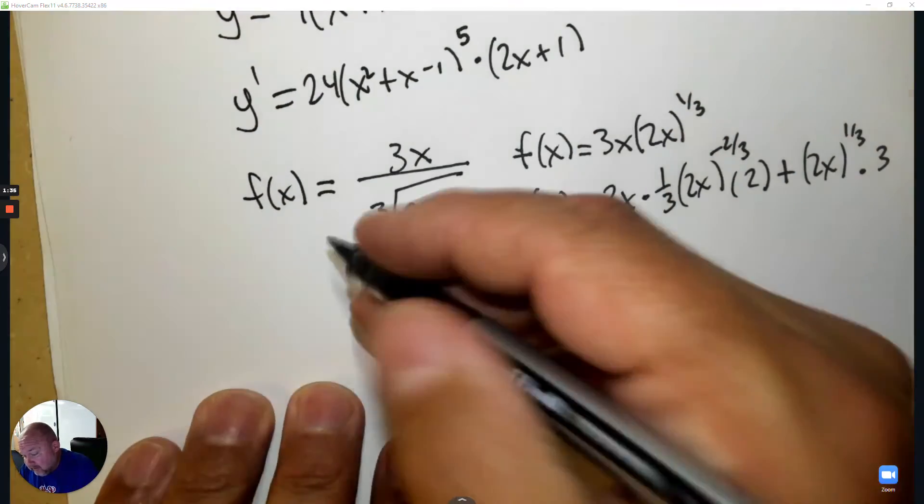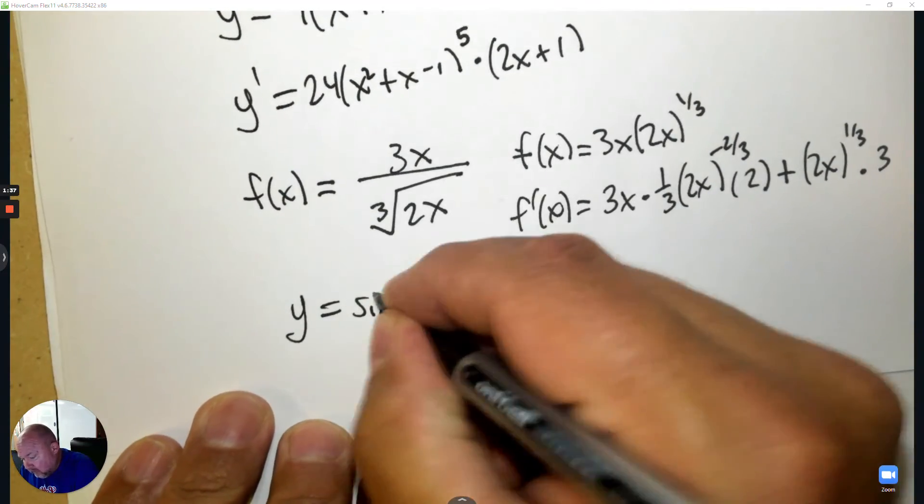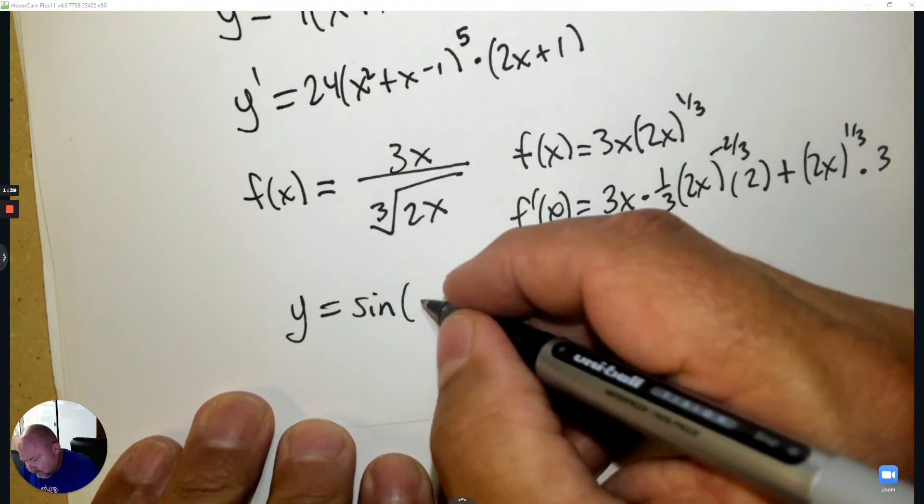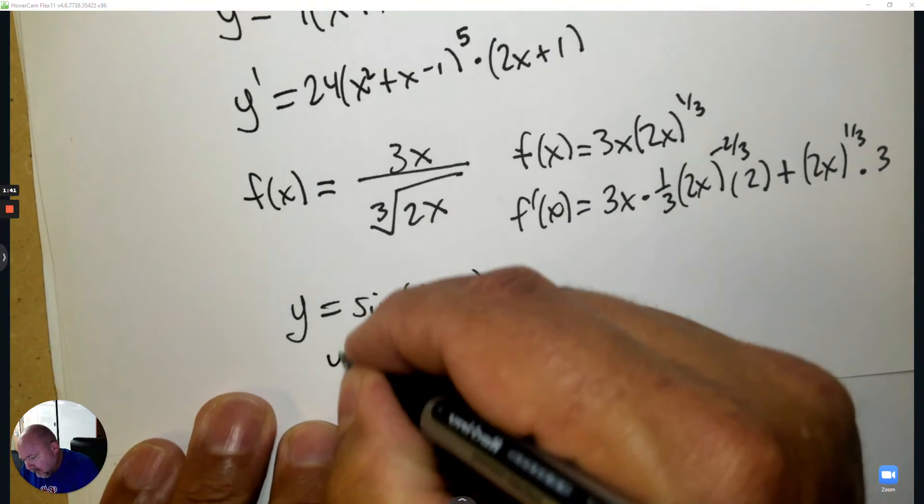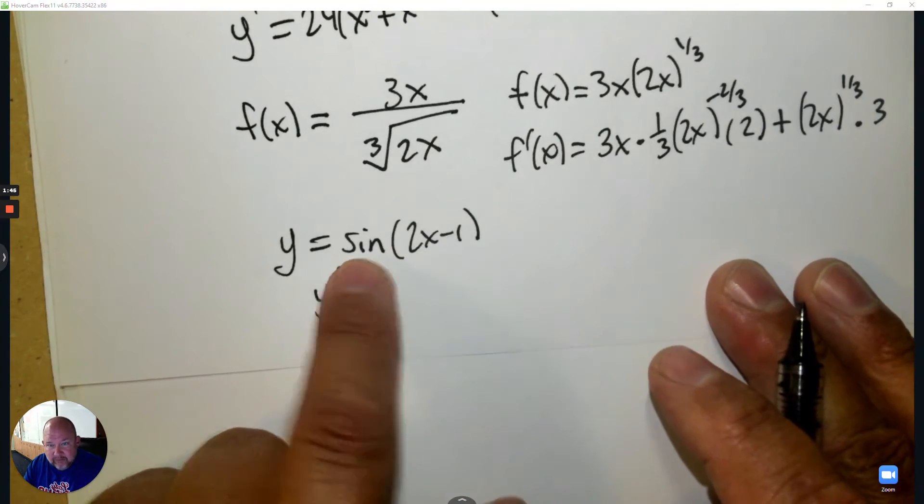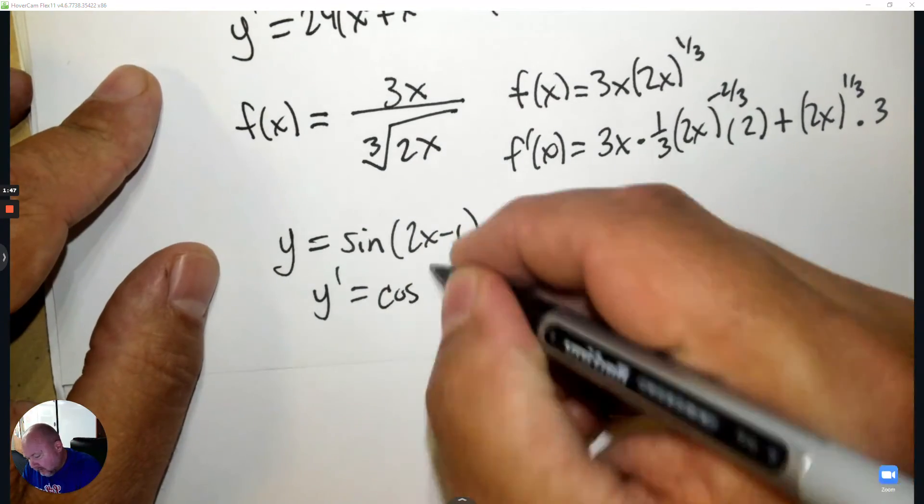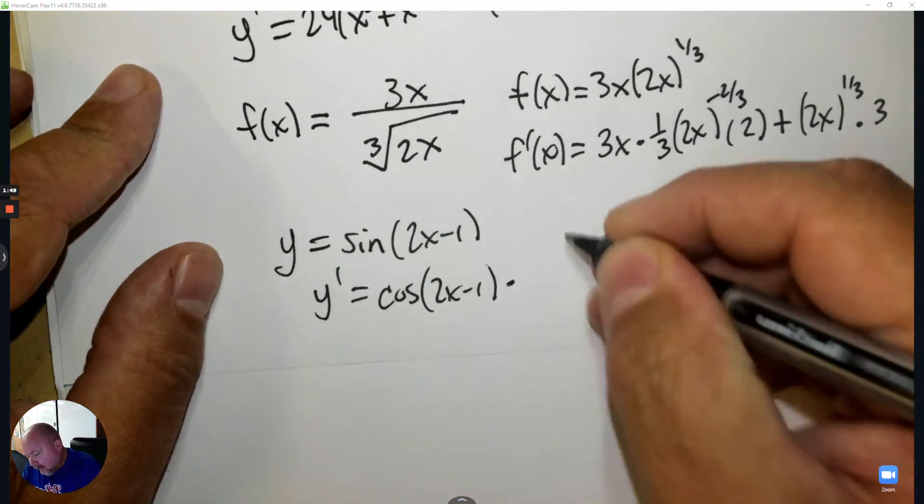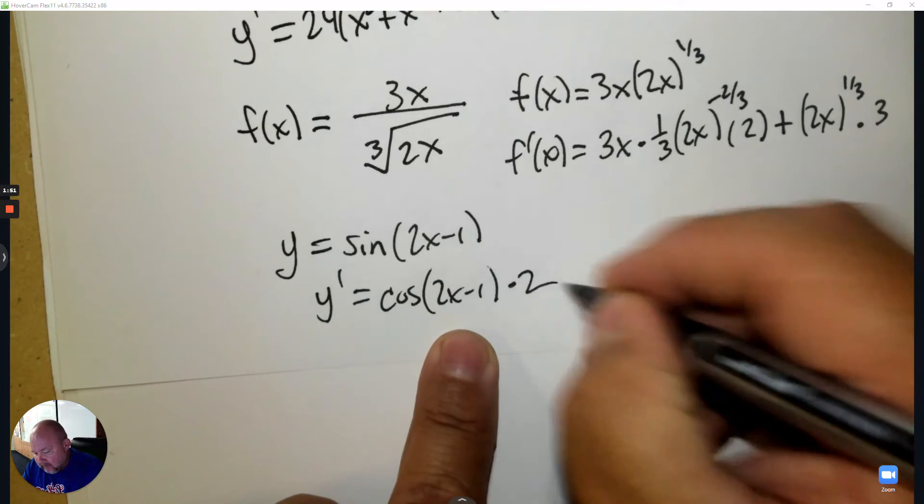Sometimes you have trigonometry. So if I give you trigonometry and say take the derivative with the chain rule, the derivative of sine is cosine, copy, and then the derivative of 2x subtract 1. That's the hook.